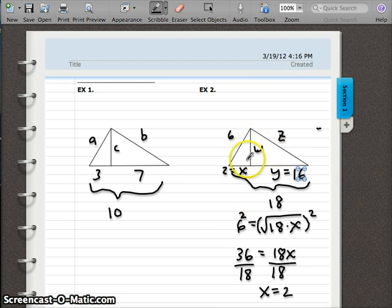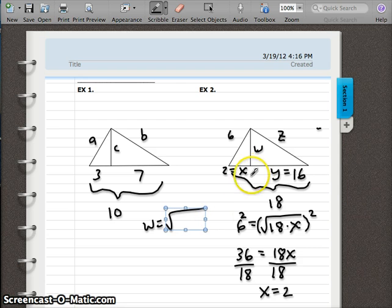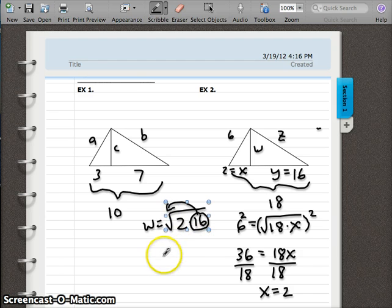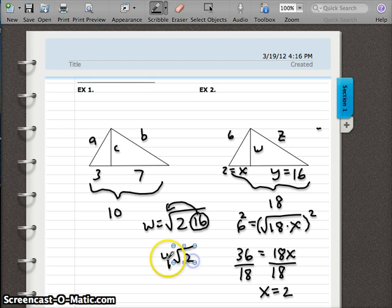We could solve for the altitude next or leg 2. It doesn't matter. Let's do altitude. So w equals the altitude equals the geometric mean of our two bases. So 2 and 16. If we remember that 16 is a perfect square and take out its root, the square root of 16 is 4. And 2 stays under the radical. So 4 times the square root of 2 is our altitude length.